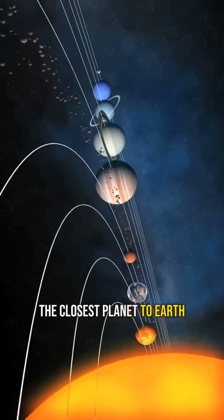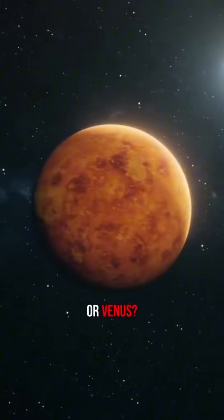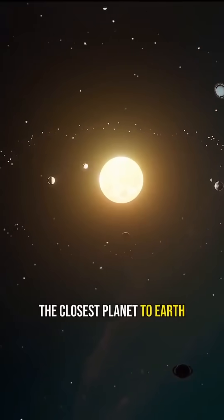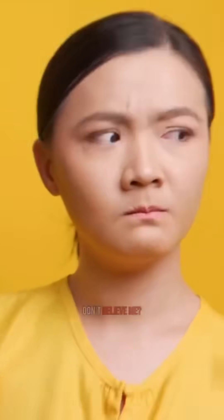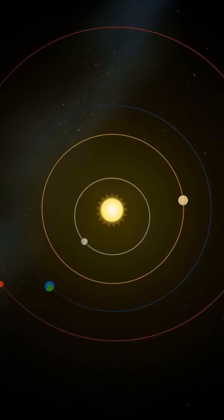Did you know that the closest planet to Earth isn't Mars or Venus? The closest planet to Earth is actually also the closest planet to the Sun, Mercury. Don't believe me? Well, let me show you.